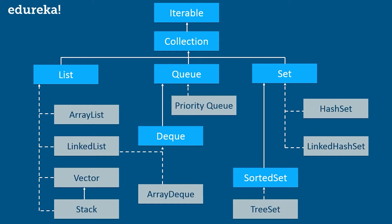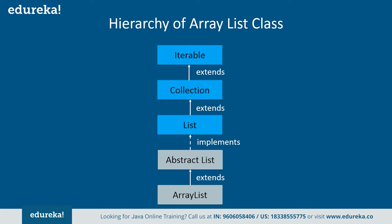Similarly, Deque is also an interface, so it extends and inherits the Queue interface. Talking about ArrayList, it uses a dynamic array for storing the elements. It inherits the AbstractList class and implements the List interface. Then the List interface extends the Collection and Iterable interfaces in hierarchical order. So this is about the hierarchy of the ArrayList class.